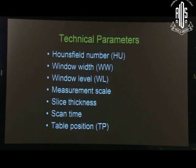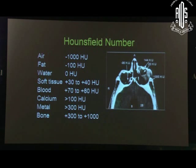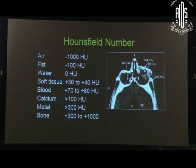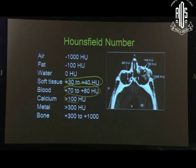Looking at the technical parameters — this is the most important part. The Hounsfield number helps you identify the tissue in question: just by looking at the Hounsfield number you can suggest a diagnosis without the pathologist seeing the tissue. Air is minus 1000, fat is minus 100, water is 0. Beyond that, soft tissue is in the range of 30–40, blood is 70–80, calcium more than 100, metal more than 300, and bone is approximately plus 1000. Everything else lies in between; soft tissue ranges from 30 to 40.